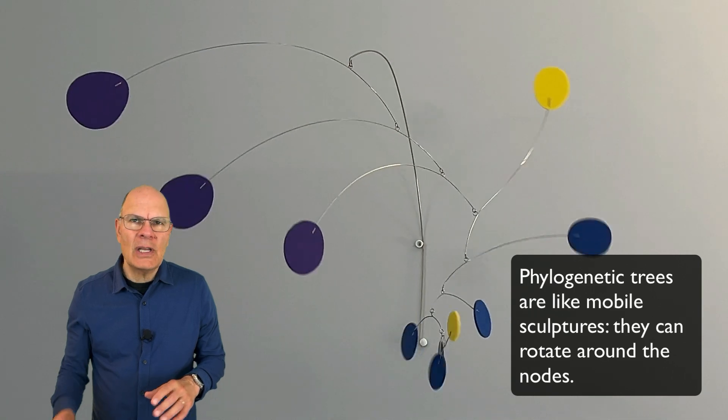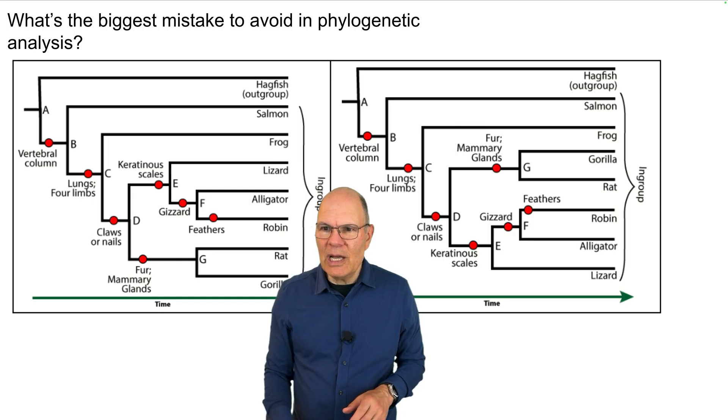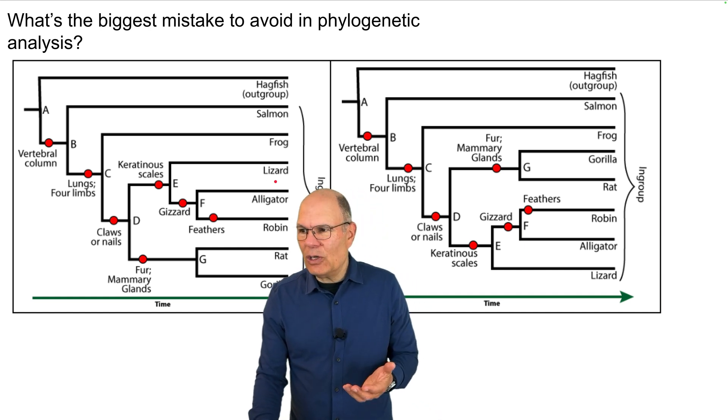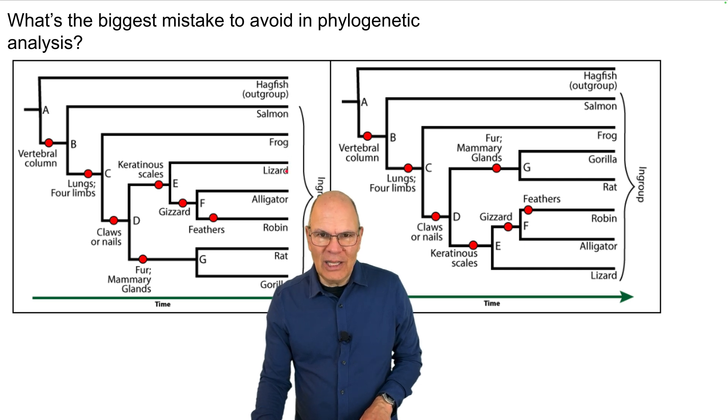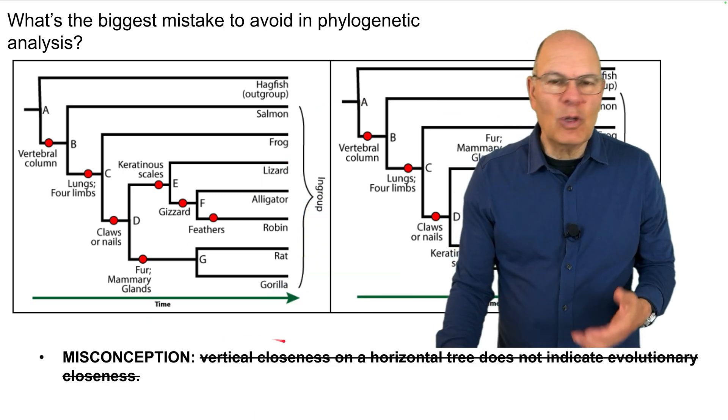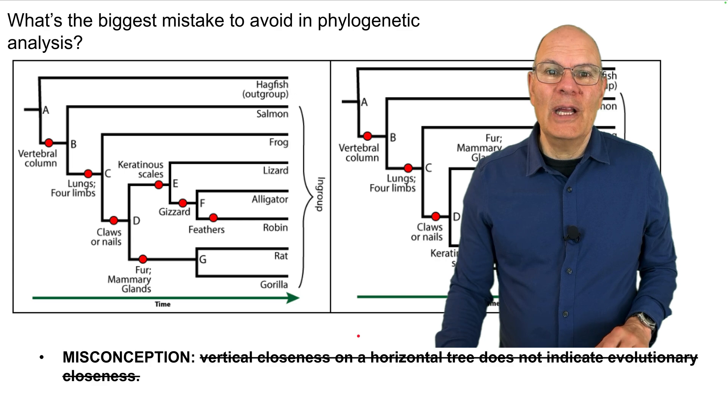And the reason for that is because a phylogenetic tree is like that kind of art form that's called a mobile. It can rotate around any of the nodes. So here's another image that drives home this point. These two phylogenetic trees are identical. And in this one, the frog is located right next to the lizard going vertically. And here, the frog is right next to the gorilla. But those are both equally true. That's because the frog and the lizard, where's their common ancestor? It's all the way back here at C. The frog and the gorilla, where's their common ancestor? It's the same common ancestor over here. So frogs are equally related to gorillas as they are to lizards. The misconception is that vertical closeness on a horizontal tree indicates something and it doesn't. It doesn't indicate evolutionary closeness. Remember that.